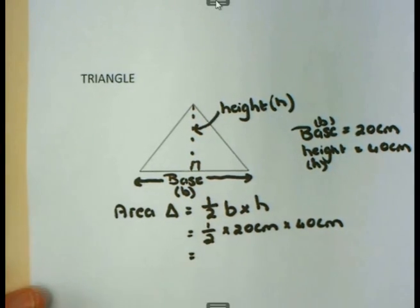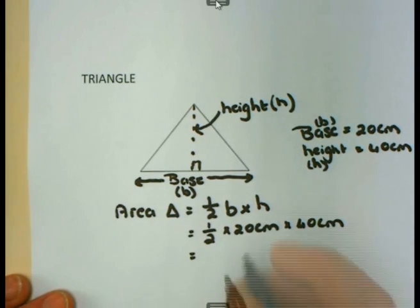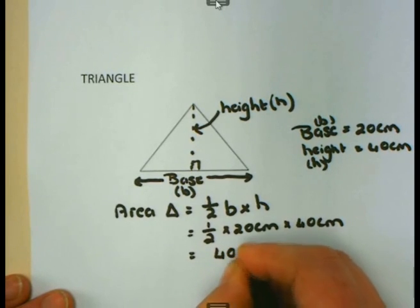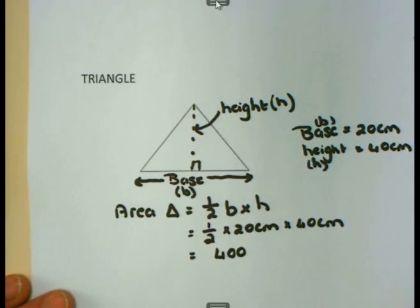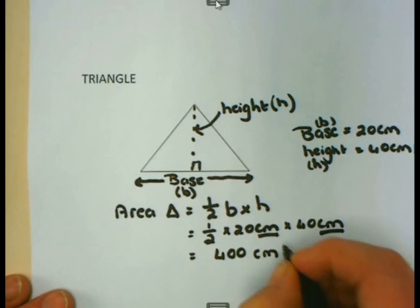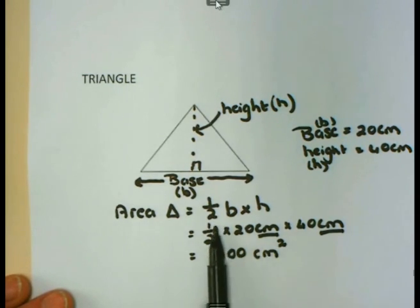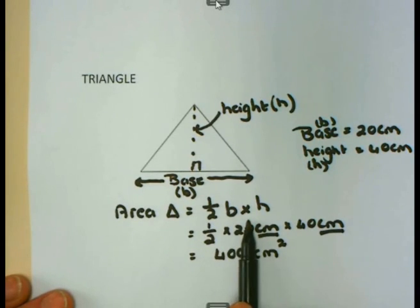Working this out, it is a simple multiplication. You can use your calculator, or simply say half of 20 is 10, and 10 times 40 is 400. The unit: since I have centimeters times centimeters, the unit is centimeters squared. So to calculate the area of a triangle, I use the formula half base times height.